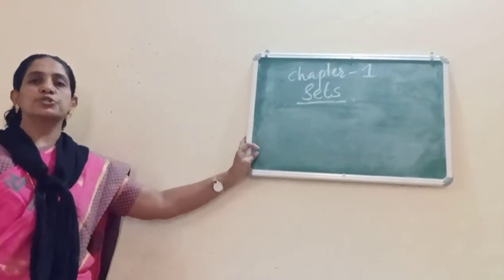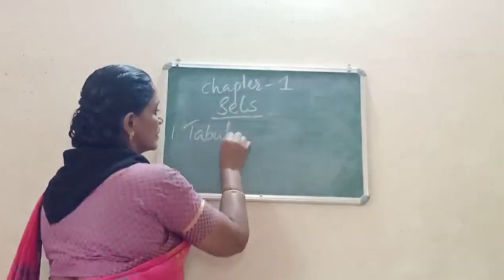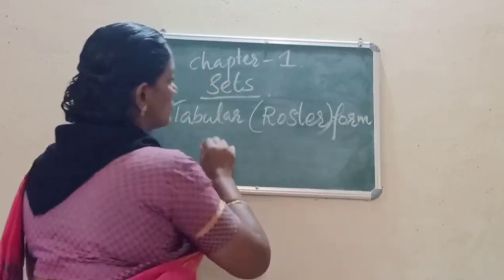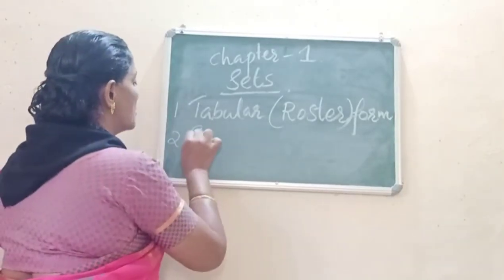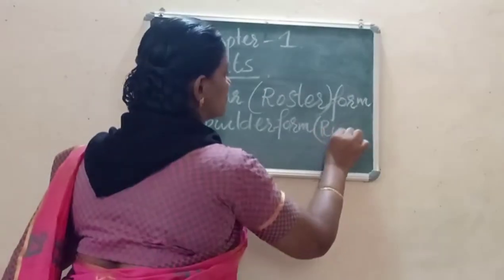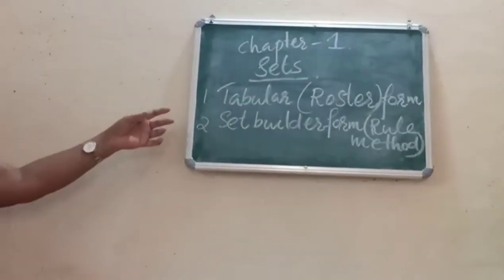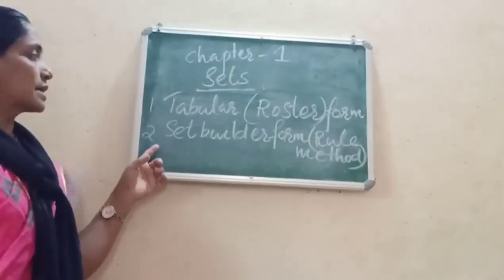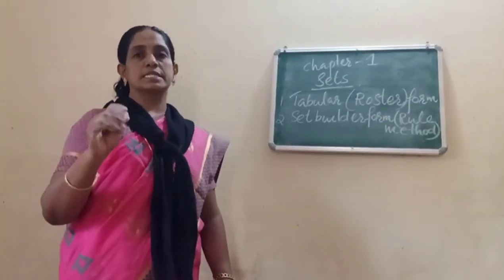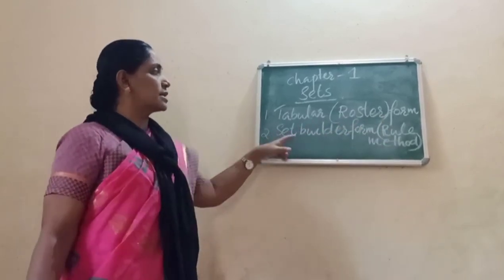Sets are represented by two ways. First is tabular form, also called roster form. Second is set builder form, also called rule method.